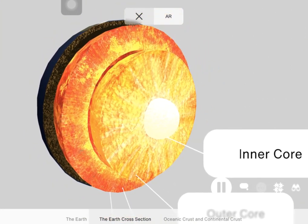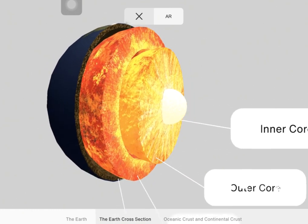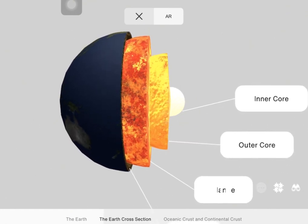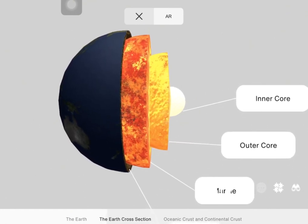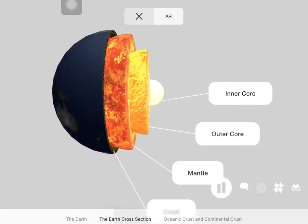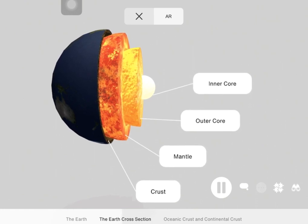Now the temperature of the crust increases with depth because of something called geothermal energy. Where the crust meets the mantle, the temperatures can be pretty varied, somewhere between 200 degrees Celsius or 392 degrees Fahrenheit, all the way to 400 degrees Celsius or 752 degrees Fahrenheit. Now the crust is the coldest layer because it is exposed to the atmosphere.